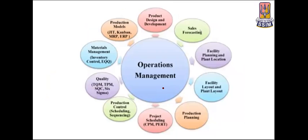Operations management deals with topics including product design and development, sales forecasting, facility planning and location, facility layout and plant layout, production planning, project scheduling, production control, quality (total quality management, total productive maintenance, statistical quality control, Six Sigma), materials management with inventory control and economic order quantity, and production models like Just-In-Time, Kanban, Material Requirement Planning, and Enterprise Resource Planning.